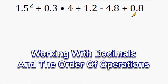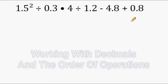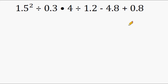We have a math expression here that we have to simplify by using the order of operations. The first thing we look for are parentheses, and we have no parentheses. So next we go to exponents, and right here we have an exponent: 1.5 to the second power.